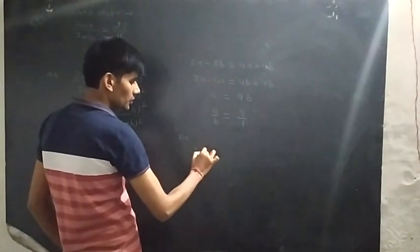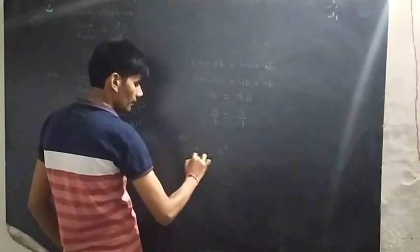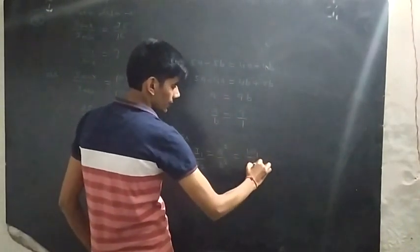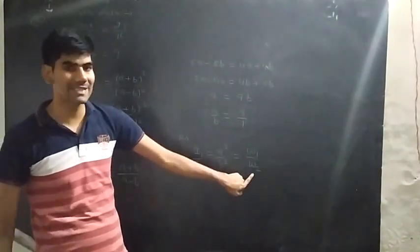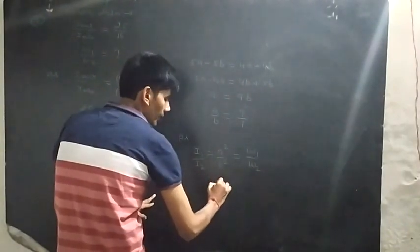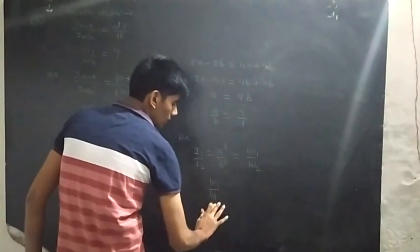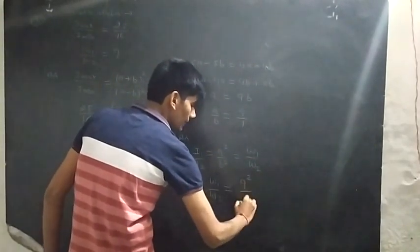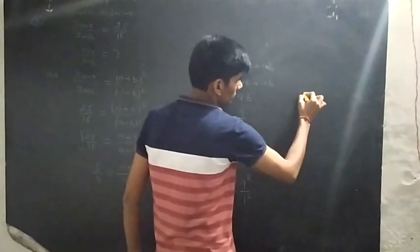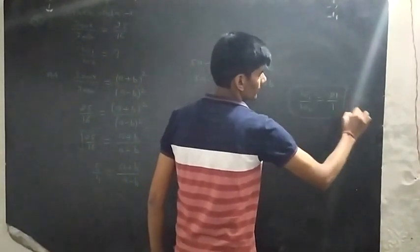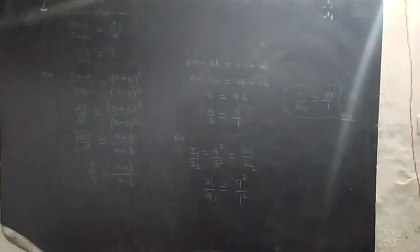As we know that intensity is directly proportional to square of amplitude, I1 proportional to a square, I2 proportional to b square, and also is equal to w1 by w2. We have to calculate w1 by w2. So we can say that w1 by w2 is equal to a square means 9 square divided by 1 square. So w1 by w2 is equal to 81 by 1. This is the required result.